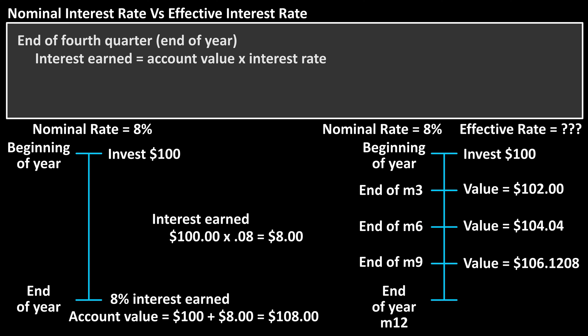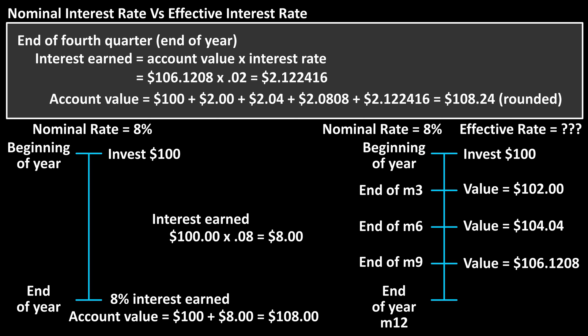Now for the end of the fourth quarter, after month 12, at the end of December, at the end of the year, the interest earned will now be the $106.1208 in the account times again 2% or 0.02, which equals $2.122416.